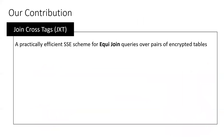In this paper, we propose Join Cross Tags, or JXT in short, a new practically efficient SSE scheme that supports equi-join queries over pairs of encrypted tables in an encrypted relational database.